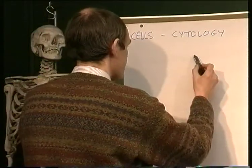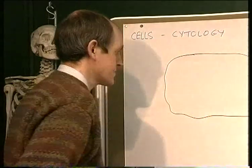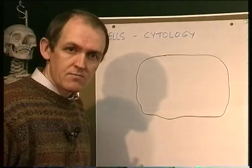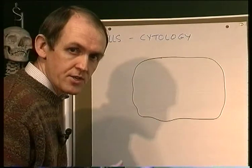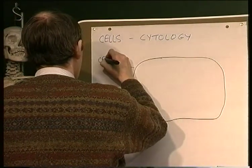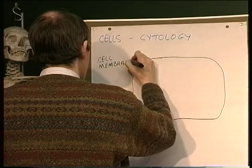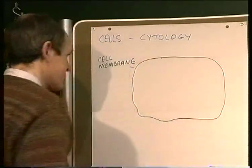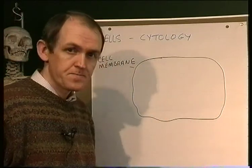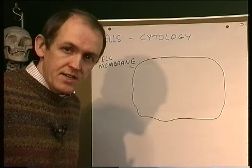A cell is a unit demarcated from the rest of the environment by a membrane. So it's a unit of life surrounded by this cell membrane. The cell membrane goes round about the outside, marking the edge of the cell. There may be another cell immediately next to it or there may not — it just depends.